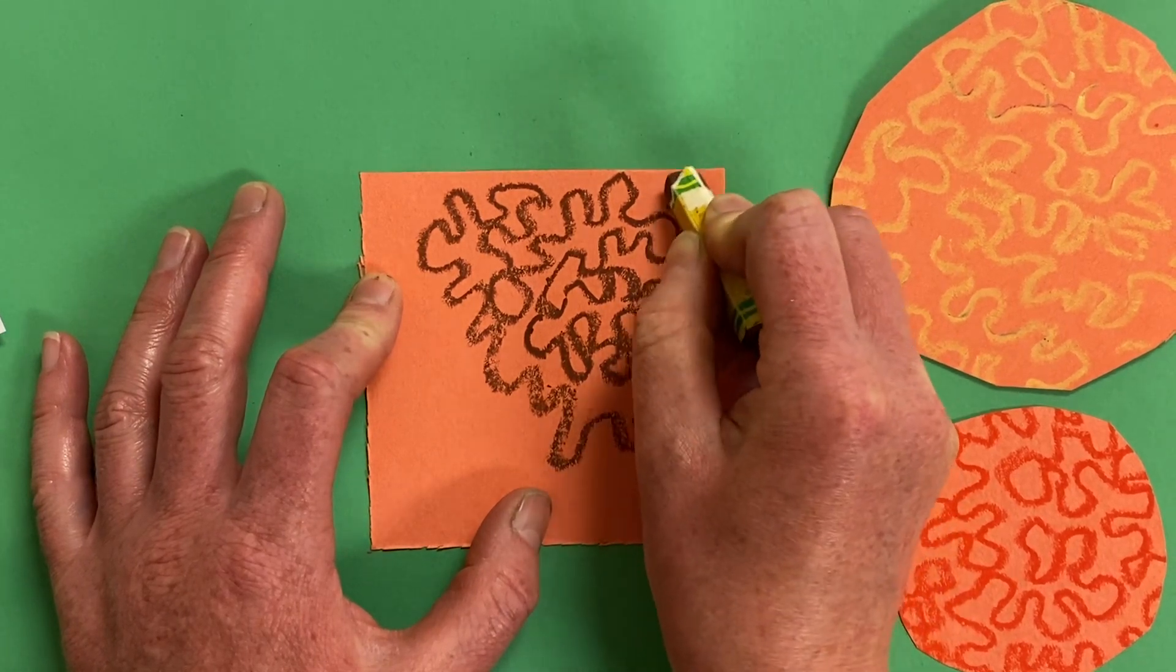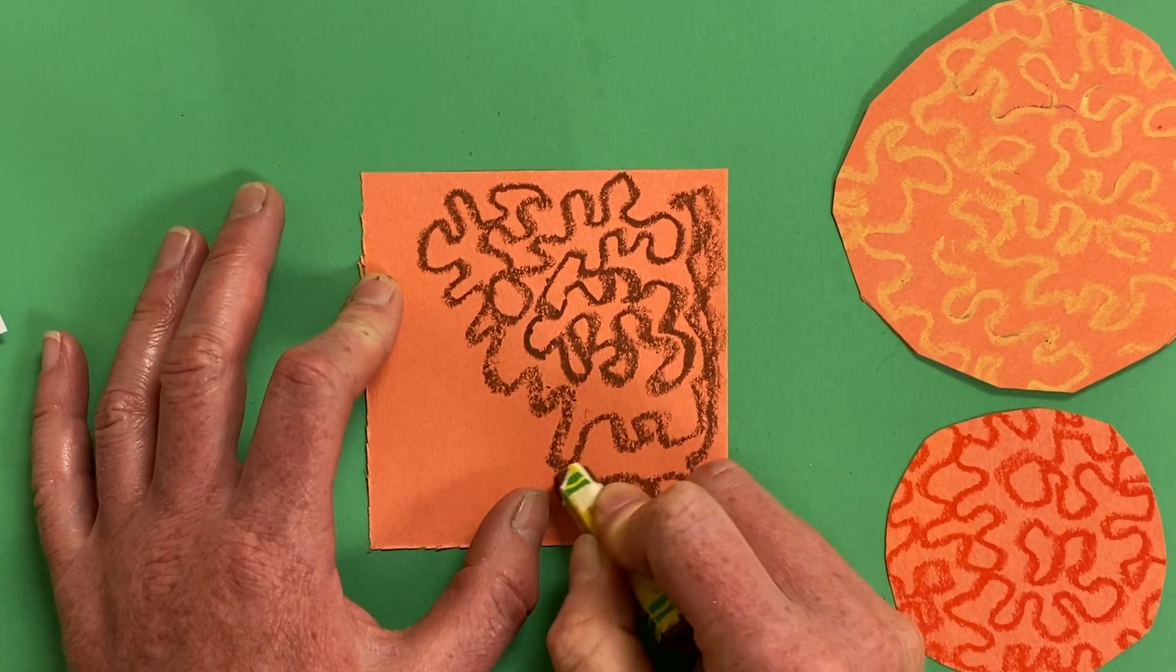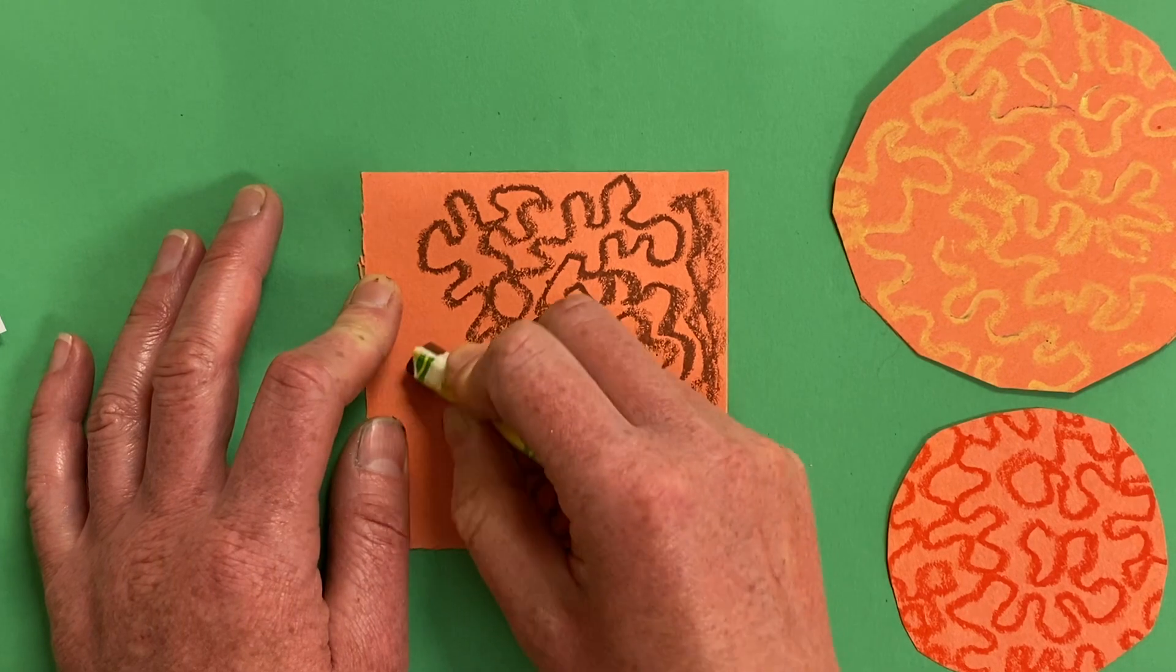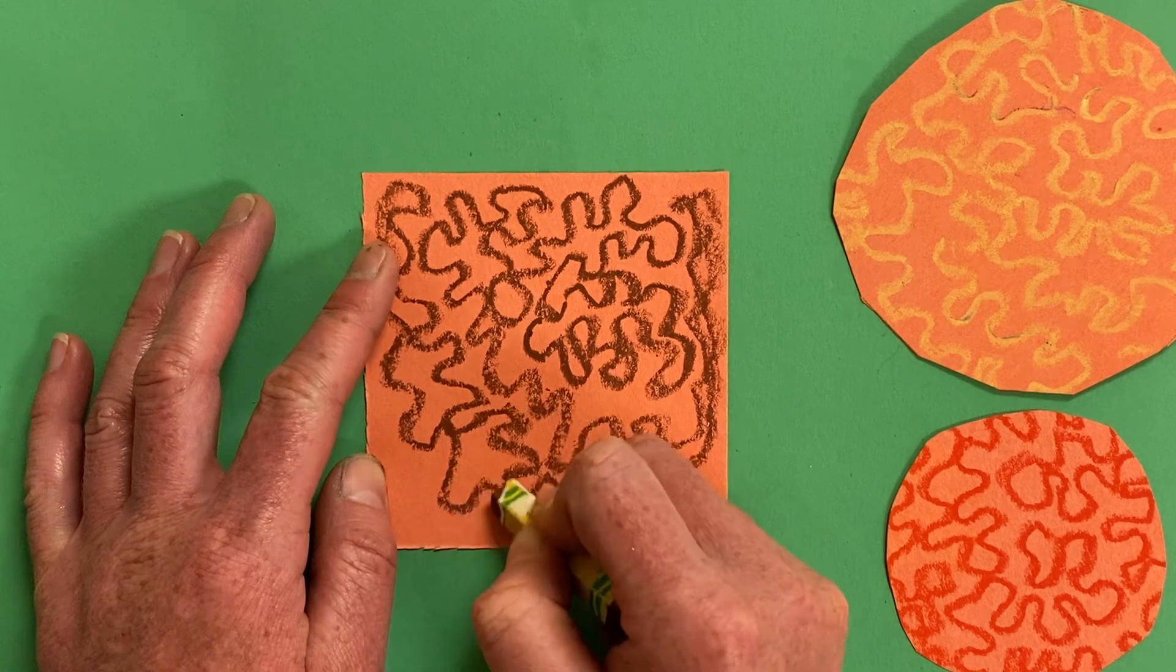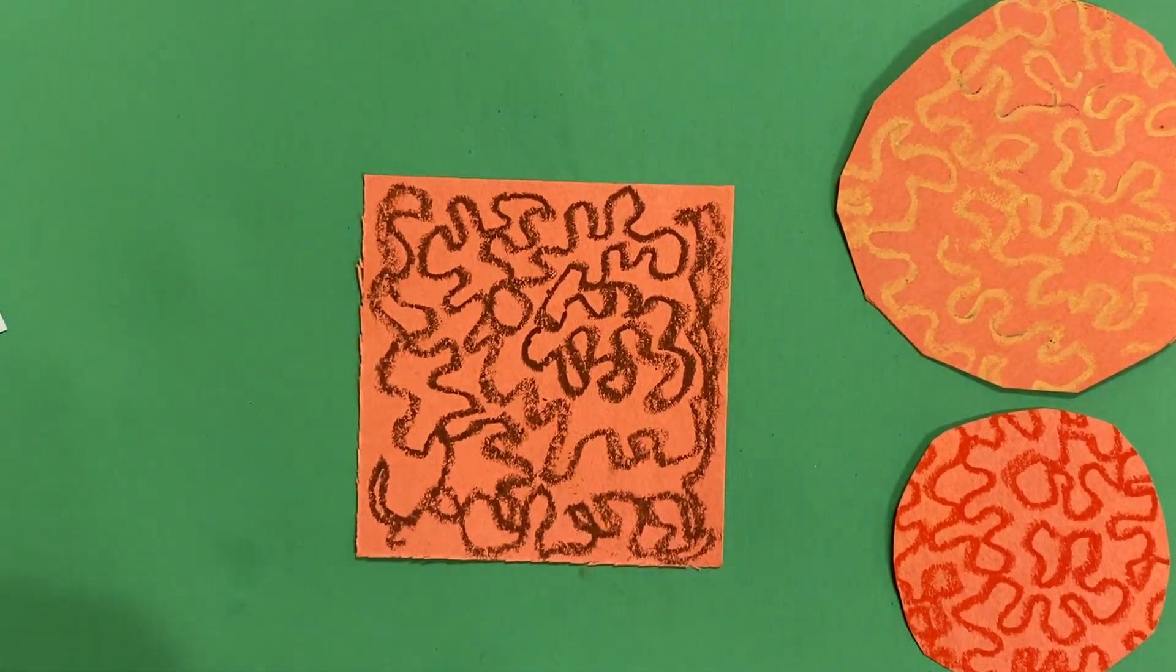I need to fill up every space of this. So I'm curving back and forth, and I haven't stopped making my line yet. I keep holding it to my paper and drawing it all over, filling it up. I'm not scribbling, I'm just going all over.